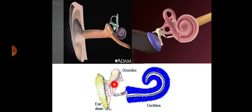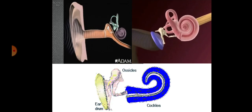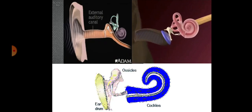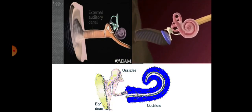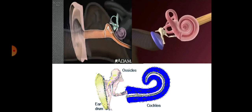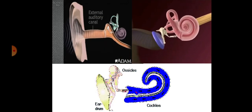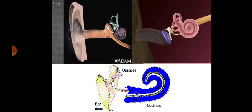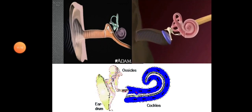In summary, sound waves are collected and conducted by the external ear, intensified by the middle ear, and converted into nerve energy or action potential in the internal ear. The action potential then reaches the temporal lobe of the cerebrum, where we understand the sound. This concludes the gross anatomy of the ear.